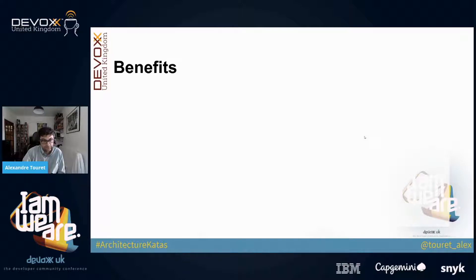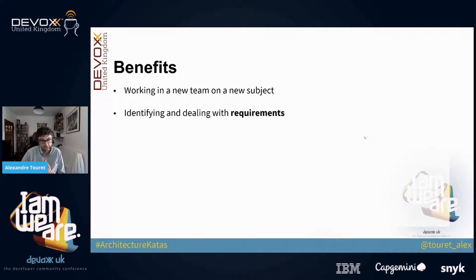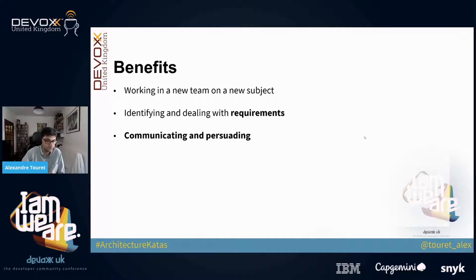What are the benefits we got? First, working in a new team on a new subject is really refreshing, especially if you work on a delivery team. Using the kata, you train to identify and deal with requirements — the kind of thing George was missing in my story. You also train to communicate and persuade different stakeholders.